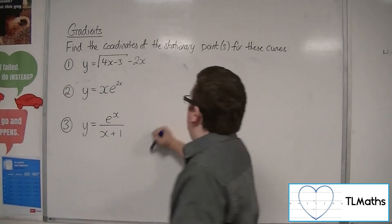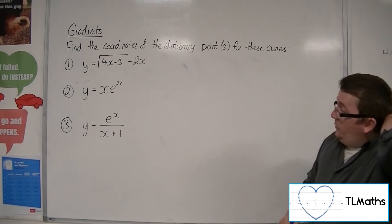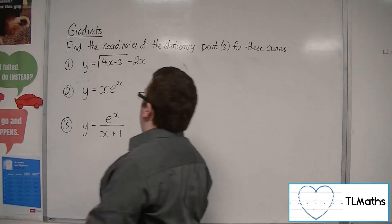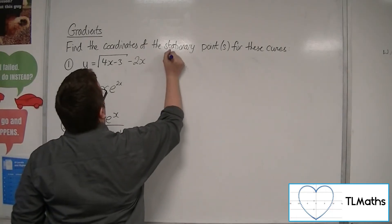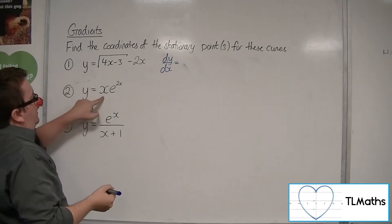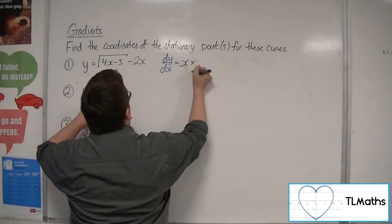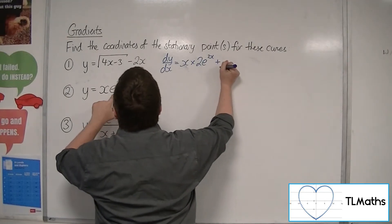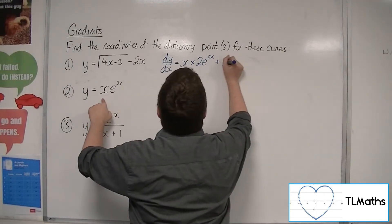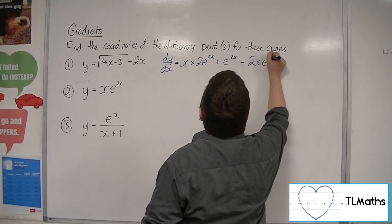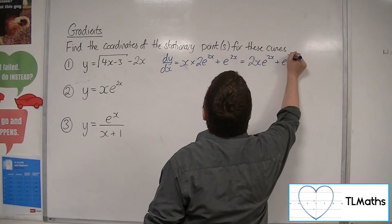Let's have a look at number 2. So y = xe^(2x). So I'm going to use the product rule to differentiate this one. So dy/dx is the first times the derivative of the second, so 2e^(2x), plus the second times the derivative of the first, so I just get e^(2x). So simplifying that, 2xe^(2x) + e^(2x).